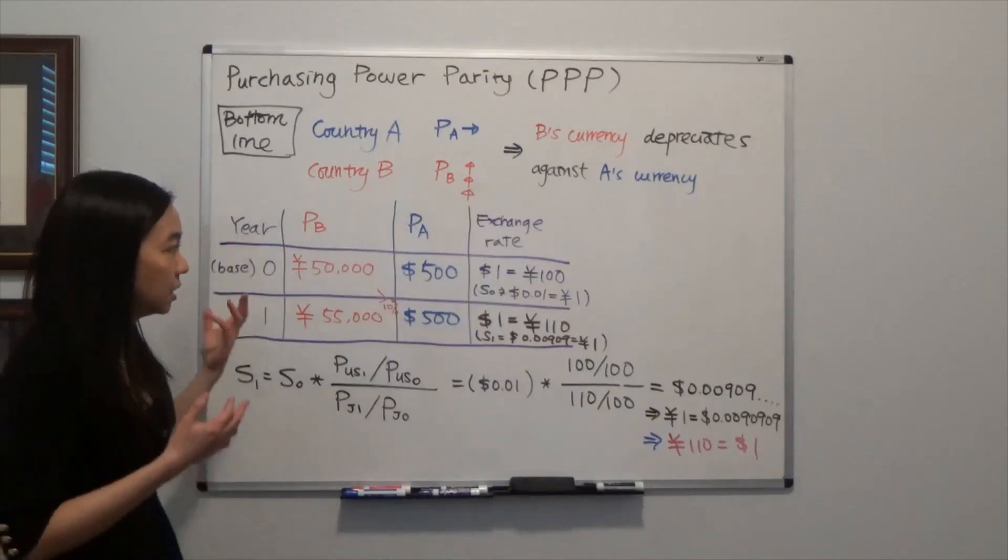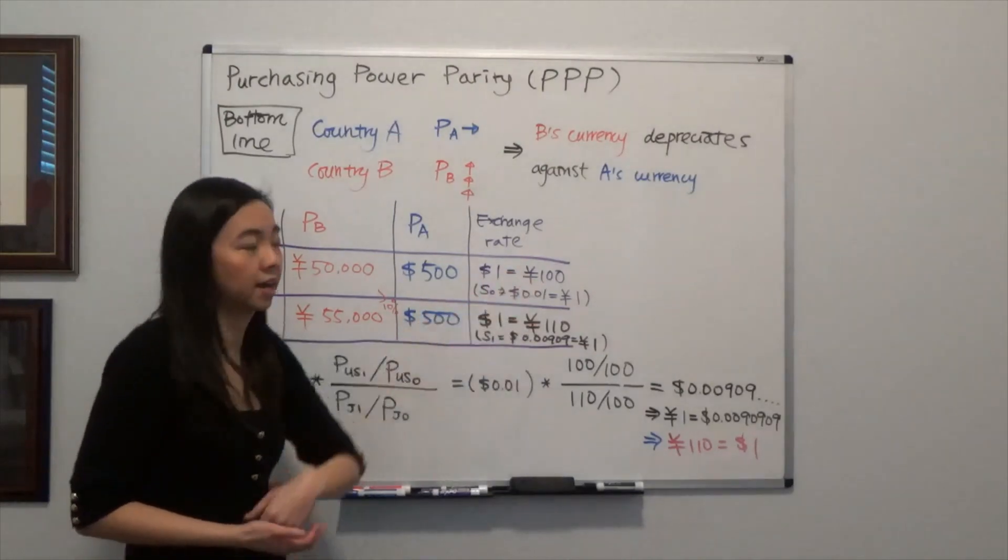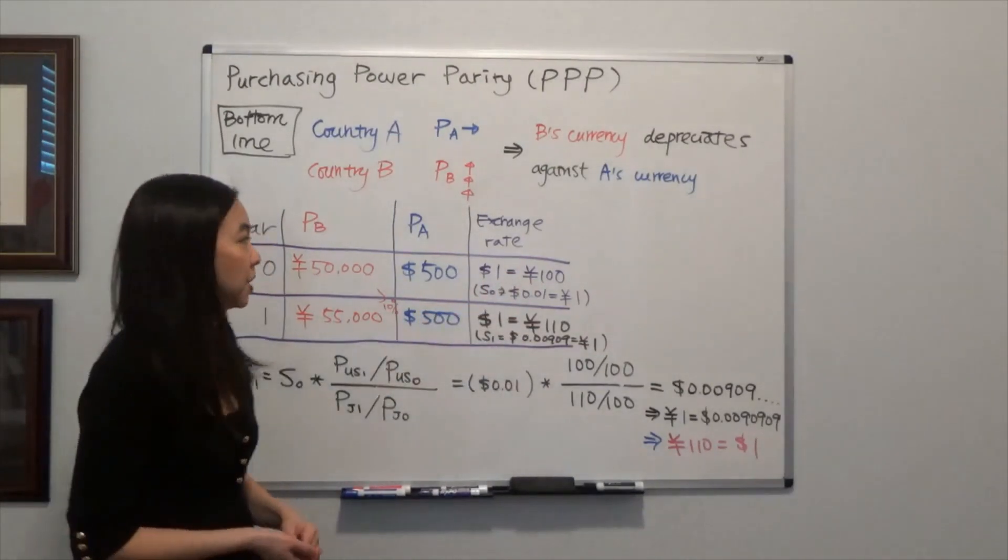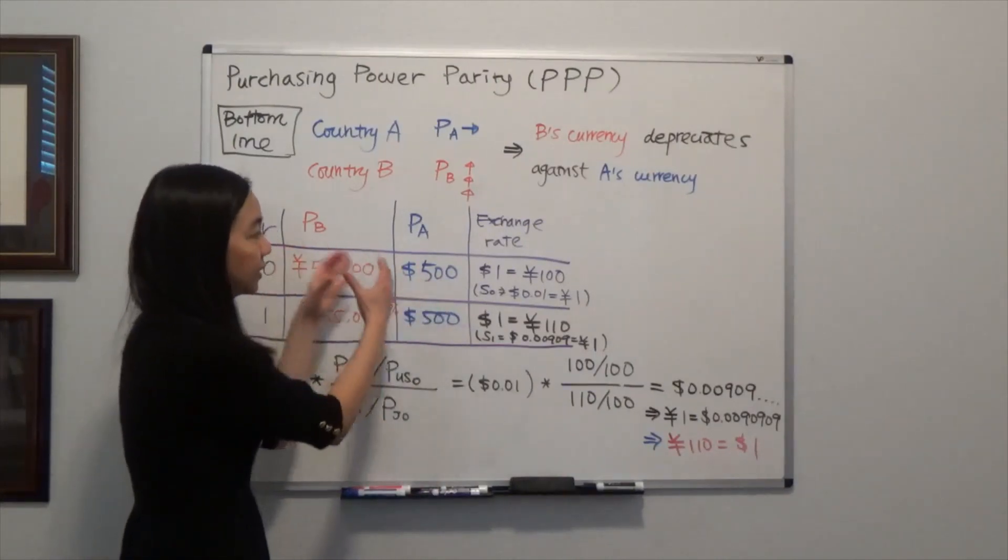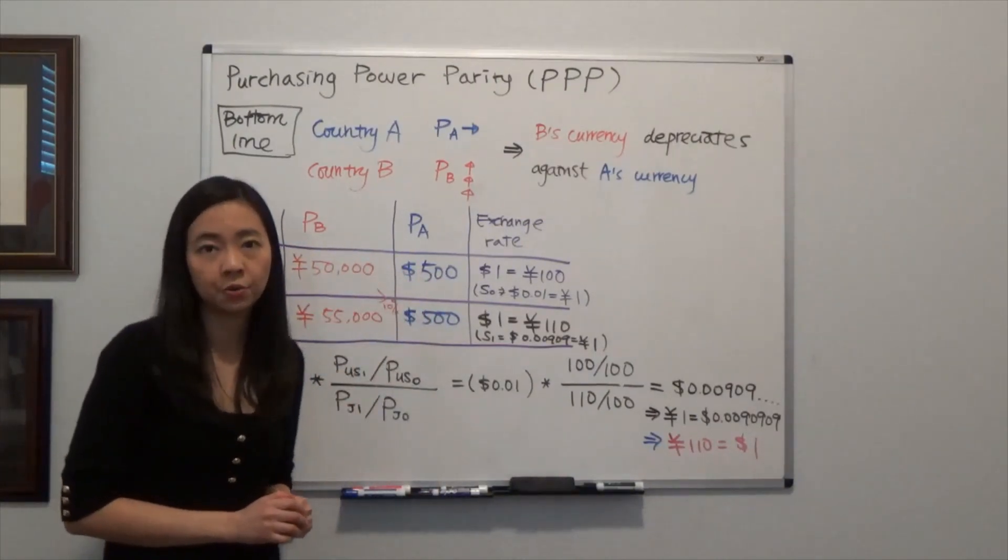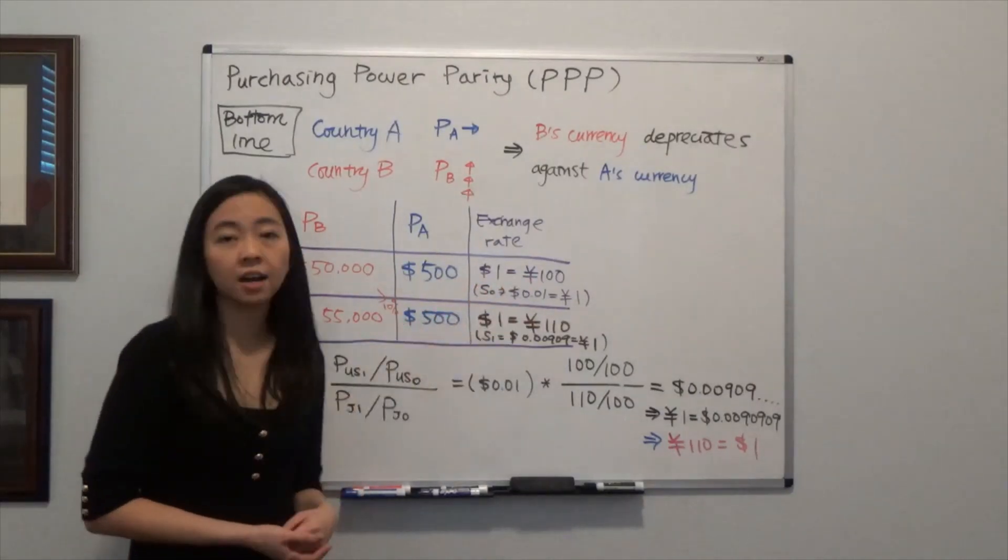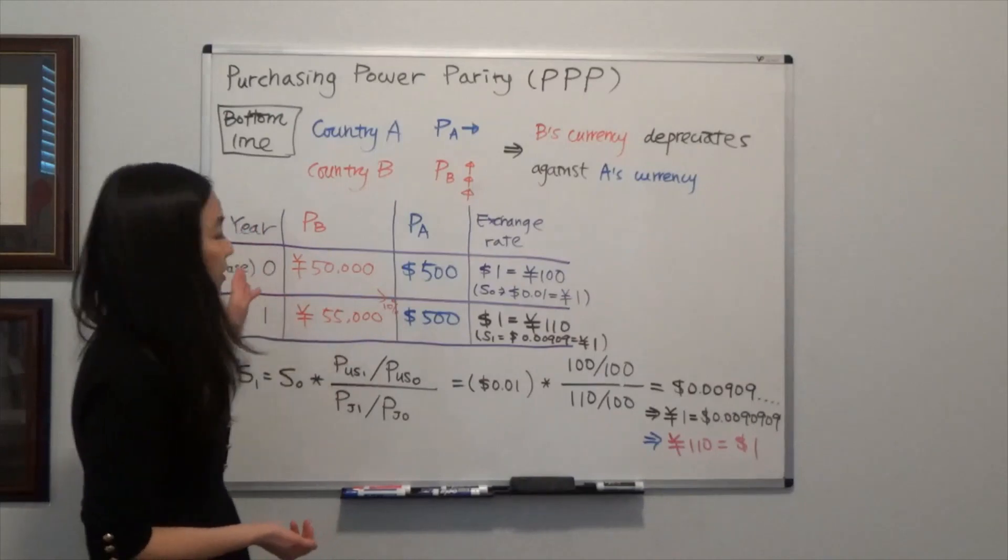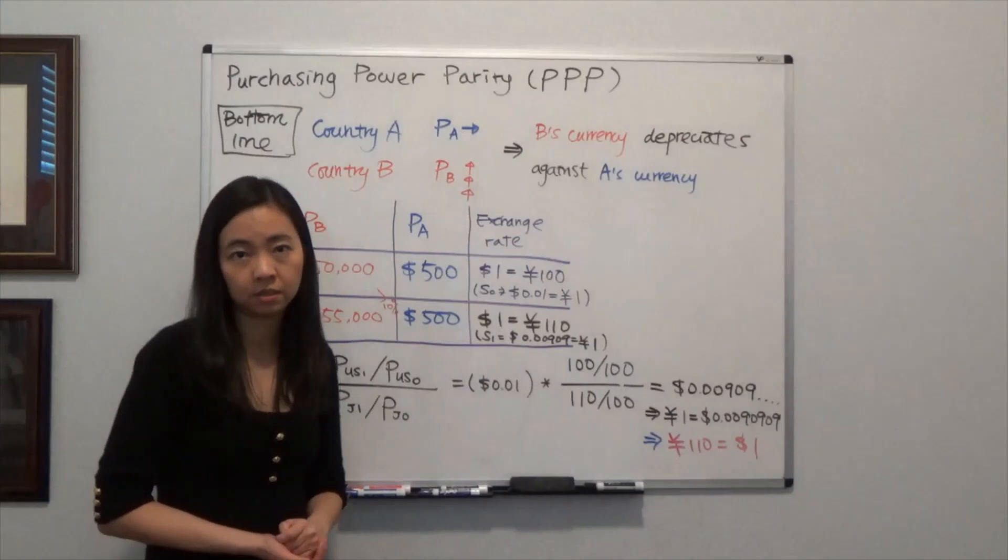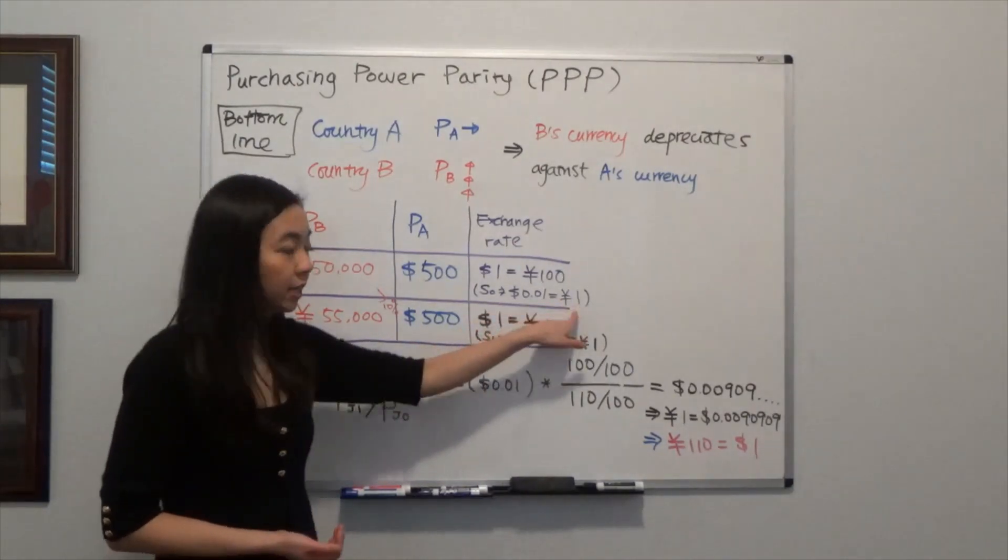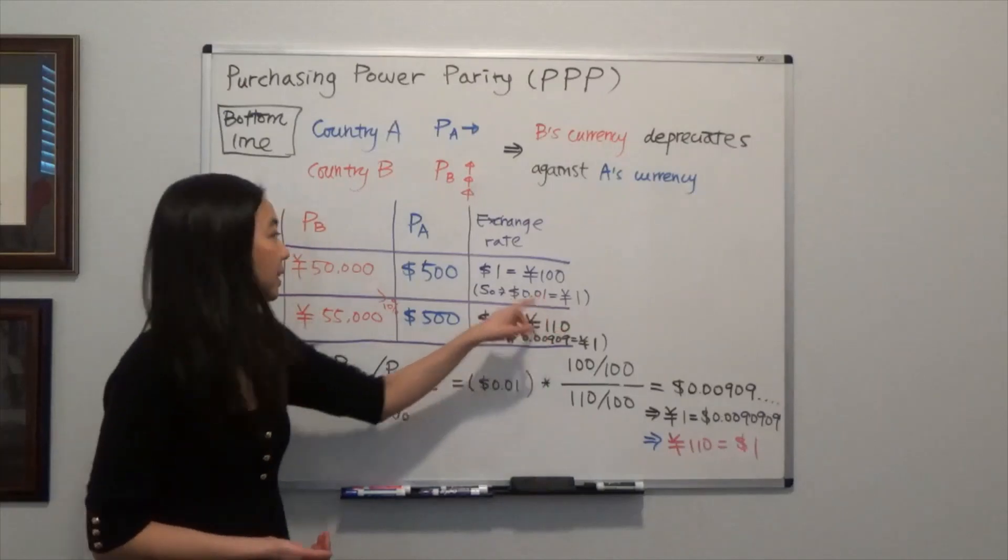Then you can guess that the exchange rate must be such that $1 can get you 100 Japanese Yen, so that this exactly the same basket is sold for the same price after you convert that into the same currency. So you know that $1 will get you 100 Japanese Yen in the base year, year 0. Or if you want to treat the Japanese Yen as a commodity, we can say the price of 1 Japanese Yen is equal to $0.01 in year 0.